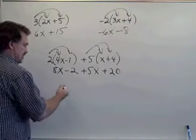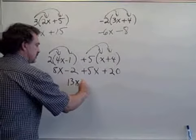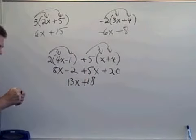8x plus 5x, that's going to give us 13x. Minus 2 plus 20 is equivalent to plus 18.